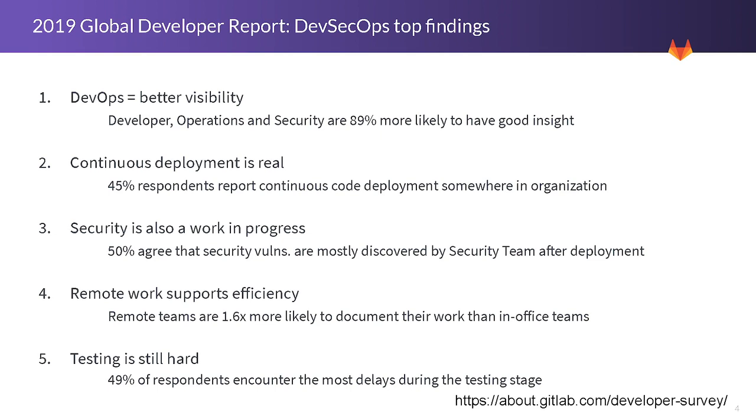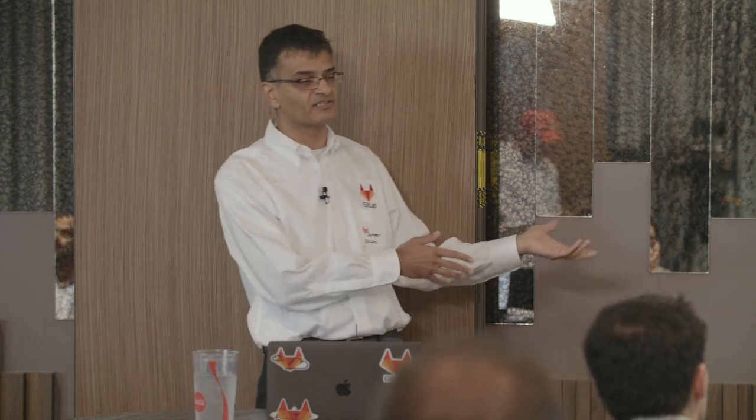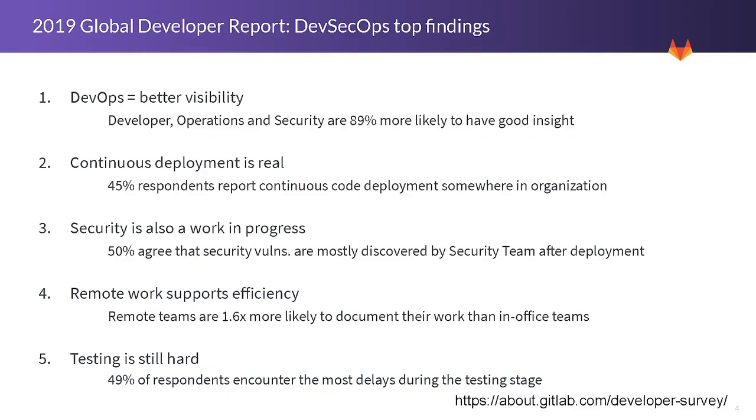What was found was that DevOps is being adopted very quickly. People feel like they're getting a lot of visibility by doing the DevOps model; they're able to deliver applications faster. Continuous deployment is becoming real. There used to be a time when stuff would sit on somebody's desk for approvals and documentation had to be written for a deployment team. Now that's all coming out real quick — about 45% of respondents said they're doing it at least somewhere in the organization.